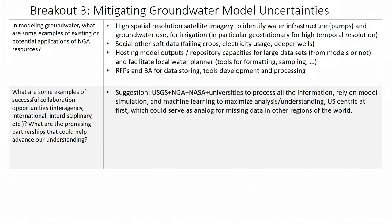We also mentioned other soft data that could inform behavior and human relationships with groundwater — understanding failing crops, electricity usage, and deeper well occurrences to better model the human component of groundwater. We thought maybe there is potential for NGA to host large model outputs using repository capacities, with tools for formatting, sampling, and transforming data sets to maximize their reuse at a local scale and facilitate decision-making. There may also be a role for NGA to develop RFPs through BAs for data storage, tool development, and processing of these large data sets.